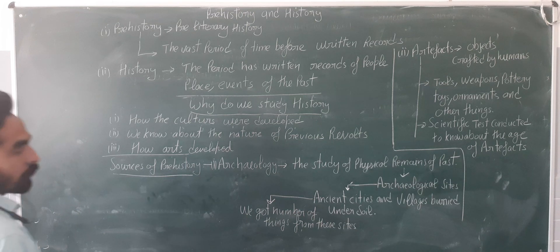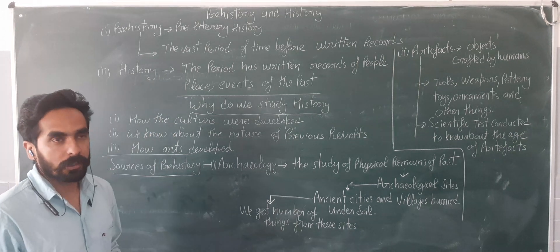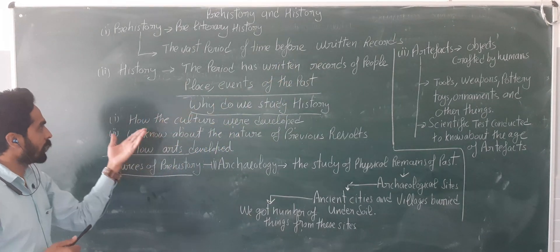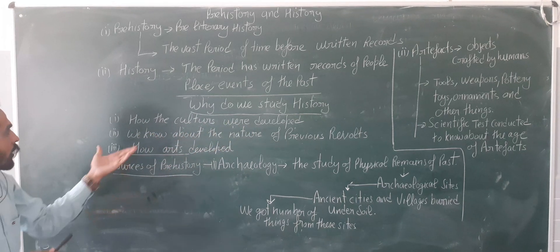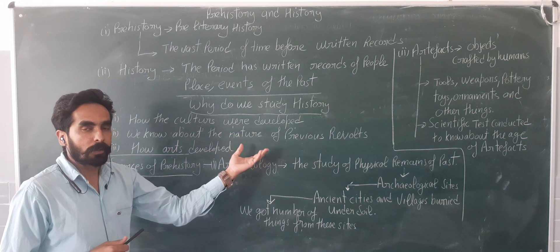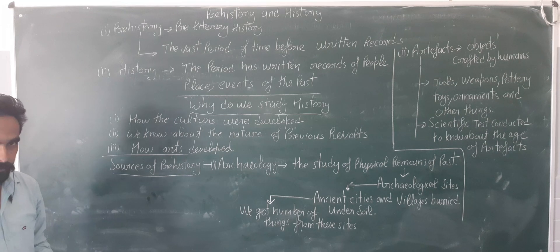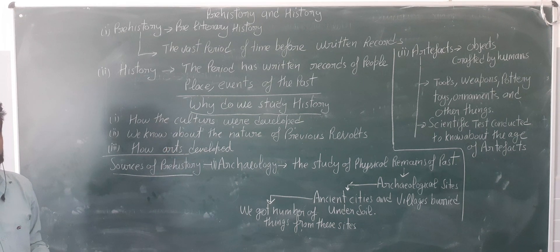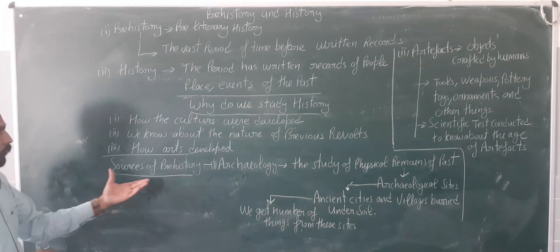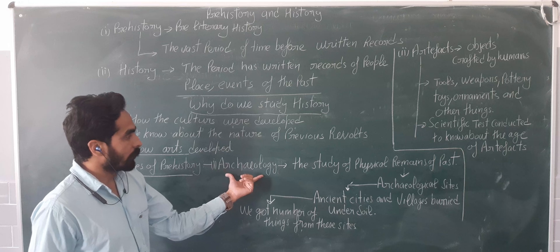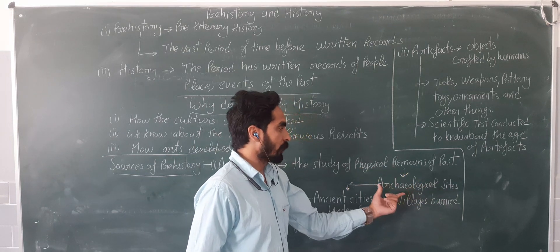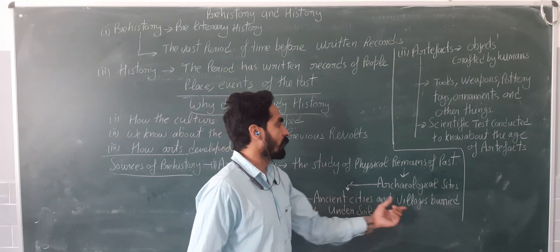Let me explain again if you are confused — please listen again. Prehistory does not have written records, while history has written records. In history we study how cultures were developed, we know about the nature of previous revolts done against kings or against the British Empire, and how arts like architecture, poetry, painting, etc. were developed. The first source of prehistory is archaeology — the study of physical remains of the past. We get physical remains from archaeological sites, which are cities and areas buried in the soil.